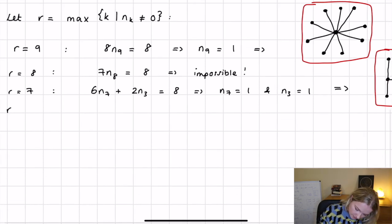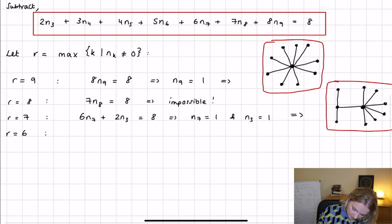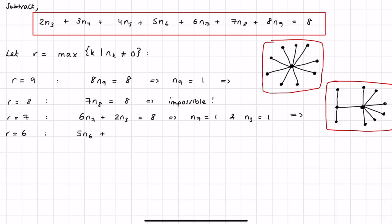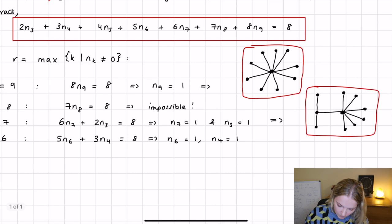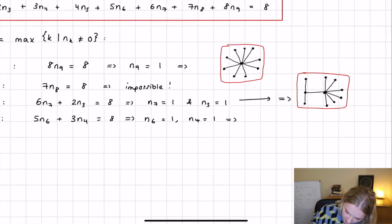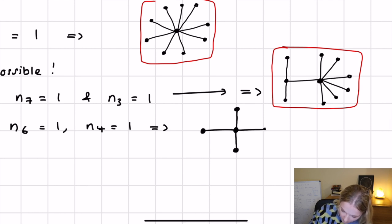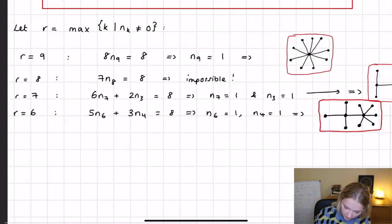Now again we move on to r equals 6. So for the r equals 6 we have, if we look, we have 5n6 plus, and in this case we'll have 3n4 equals 8, which implies that n6 equals 1 and n4 must therefore equal 1. Now let's draw that somewhere on here. What I'm going to do is just make these a little bit smaller so I can fit all of them on the page. Now for this example, so we have one node that has 6 and we have one node that has 4 vertices going out of it. So that is, this one looks like this. So this one has the 4 lines coming out of it and then this one here has 6. So we have the third solution. Okay, so there we go, that is the r equals 6. We have a third solution.